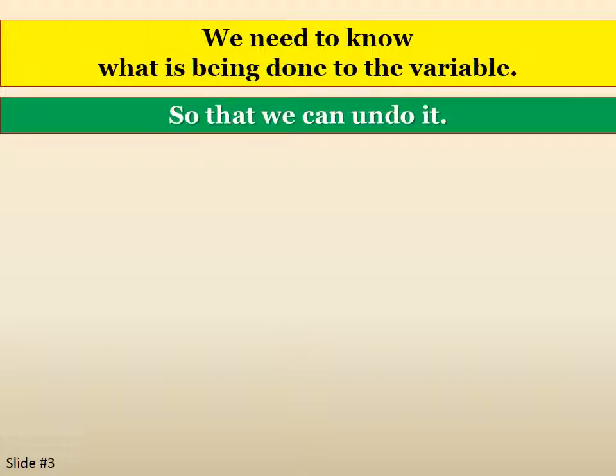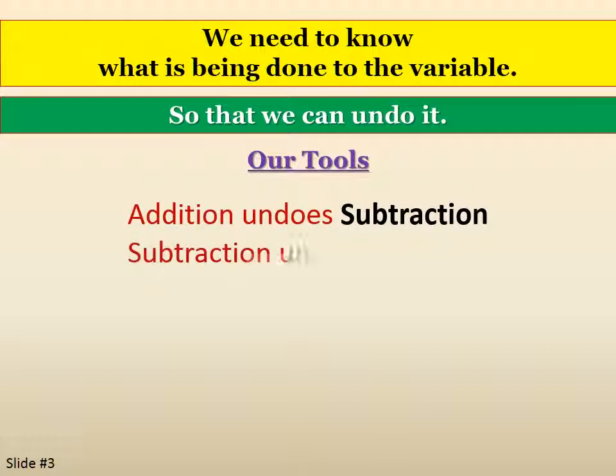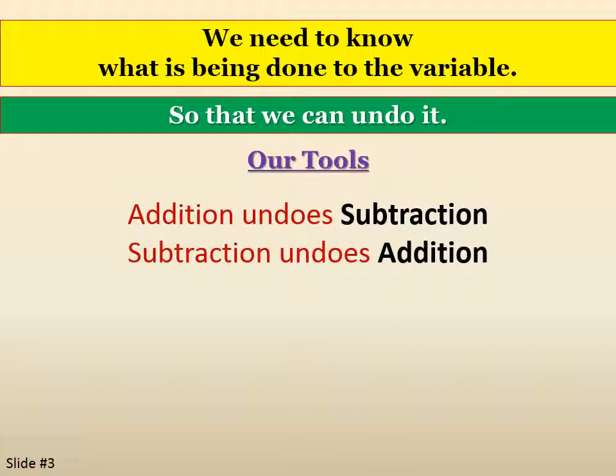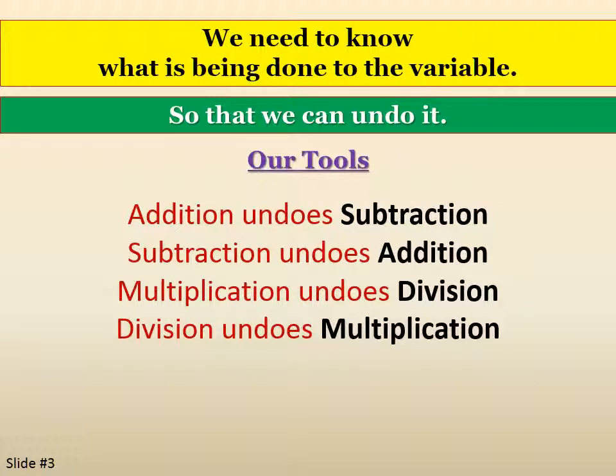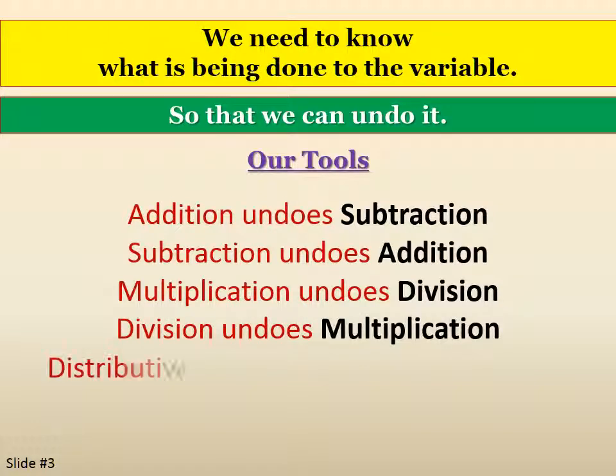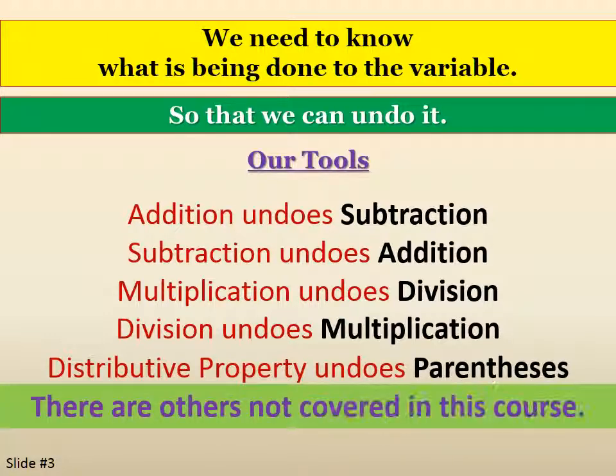So in order to do this, we need to know what's being done to the variable so that we can undo it. Our tools: Addition undoes subtraction. Subtraction undoes addition. Multiplication undoes division. Division undoes multiplication. And the distributive property undoes parentheses. There are other tools available besides just the four main operations.